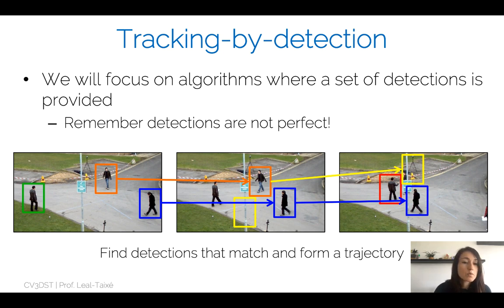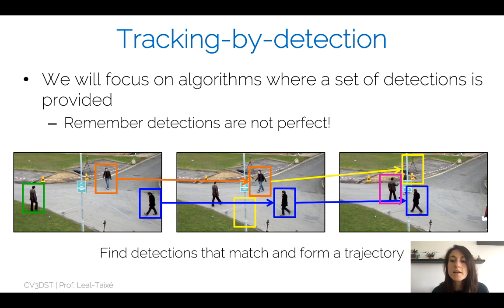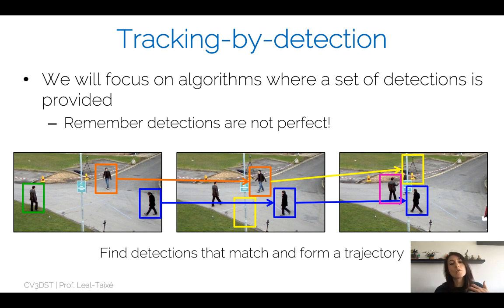The same happens with false negatives. For example, we start a green trajectory but there's no detection to match it in the second frame, so the only thing we can do is cut that trajectory and restart it in the third frame with another identity. Errors in detections make tracking a harder task.